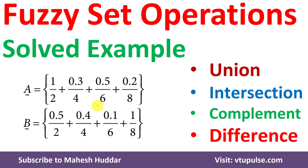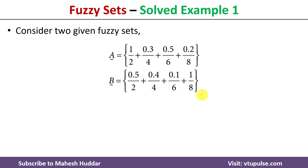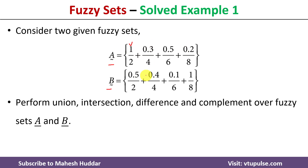Welcome back. In this video, I will discuss how to perform union, intersection, complement, and difference on given fuzzy sets, with the help of a simple solved example. We have been given two fuzzy sets, A and B, with four elements each. The degree of membership of element 2 in fuzzy set A is 1, degree of membership of element 4 in fuzzy set A is 0.3, and so on.